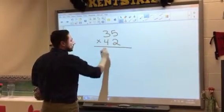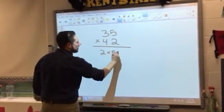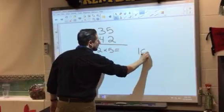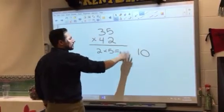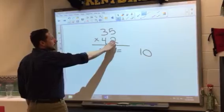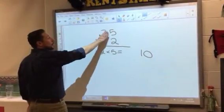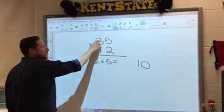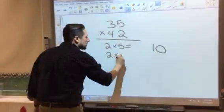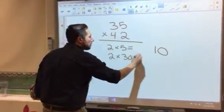First I'm going to do 2 times 5. 2 times 5 equals 10. I'm going to line these numbers up by place value so I can add them up easily at the end. Then I'm going to do 2 times 30. Not a 3 but that's worth 30. So 2 times 30 is 60.